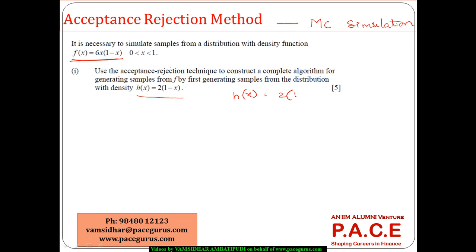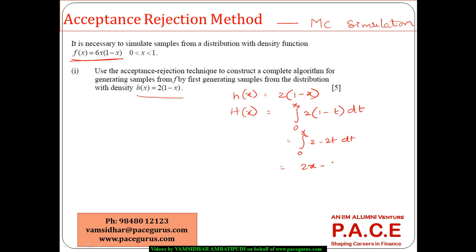First, I take h(x) as the base distribution, and I need to find its cumulative distribution function. That is the integral from 0 to x of 2(1 - t) dt, which becomes the integral of (2 - 2t) dt. This evaluates to 2x - x². So the distribution function H(x) = 2x - x².